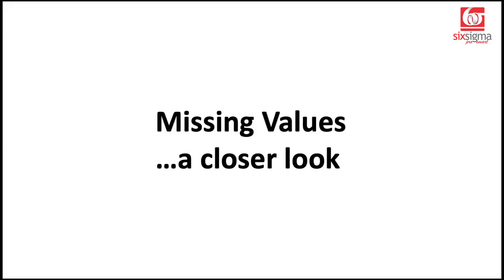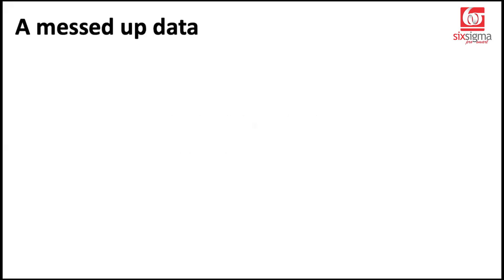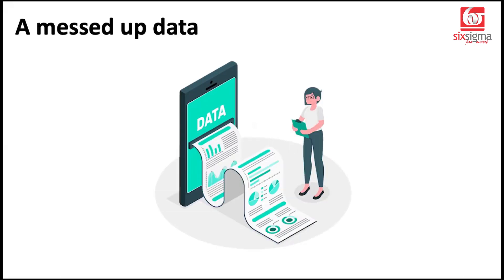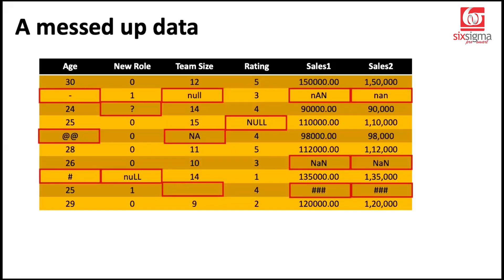What do we need to have a closer look at missing values? Well, the first ingredient is that we need a really messed up dataset. Maybe something like this. We have only 10 rows here — a very simple data frame — and we have features like age, new role, team size, rating, sales one, and sales two.